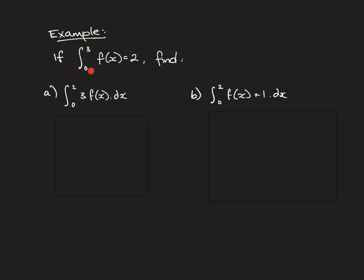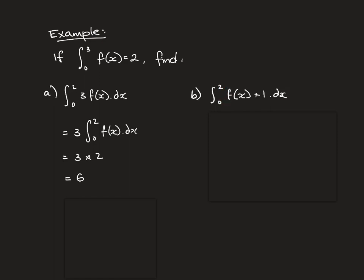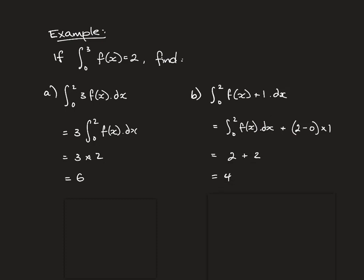Let's have a go at some questions. If the integral from 0 to 3 of f of x equals 2, find the integral from 0 to 2 of 3f of x. This is a dilation factor — we triple the area, giving us 6. For the integral from 0 to 2 of f of x plus 1, the plus 1 gives a rectangle underneath that is 1 unit high and 2 units wide. So you go straight to your integral plus width times height to get your answer.